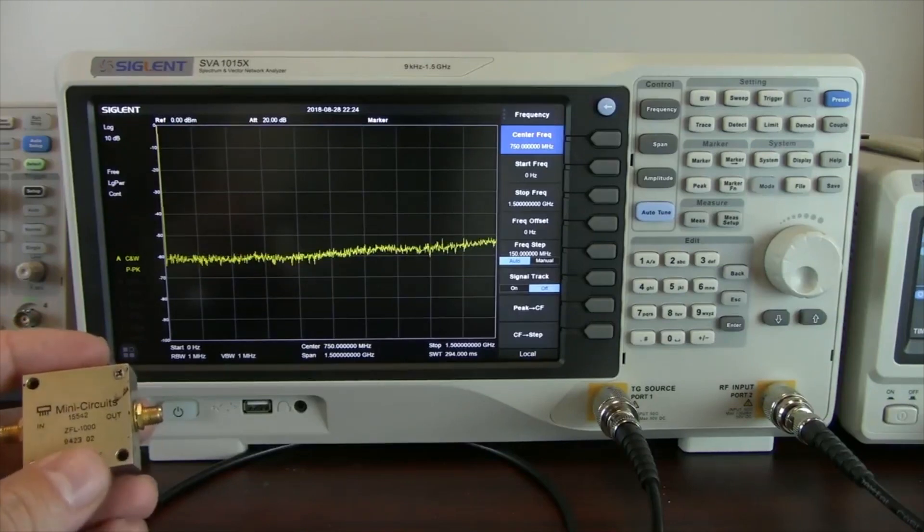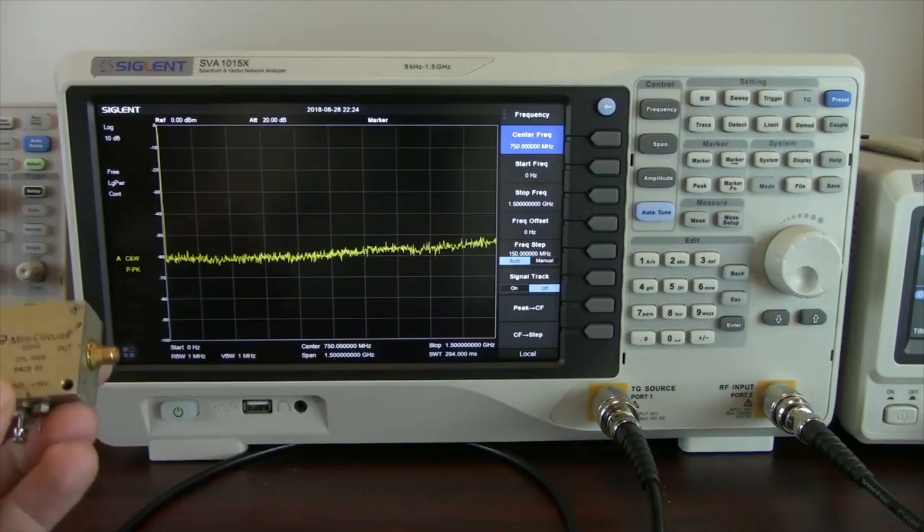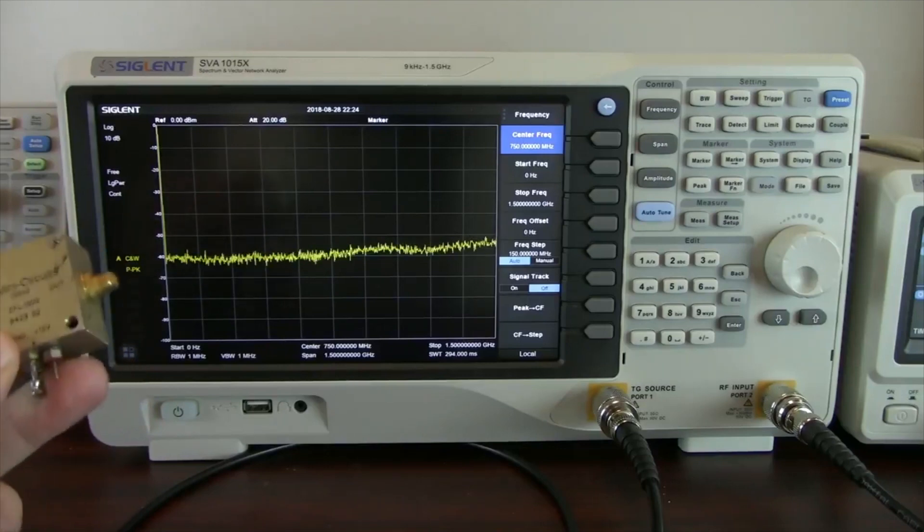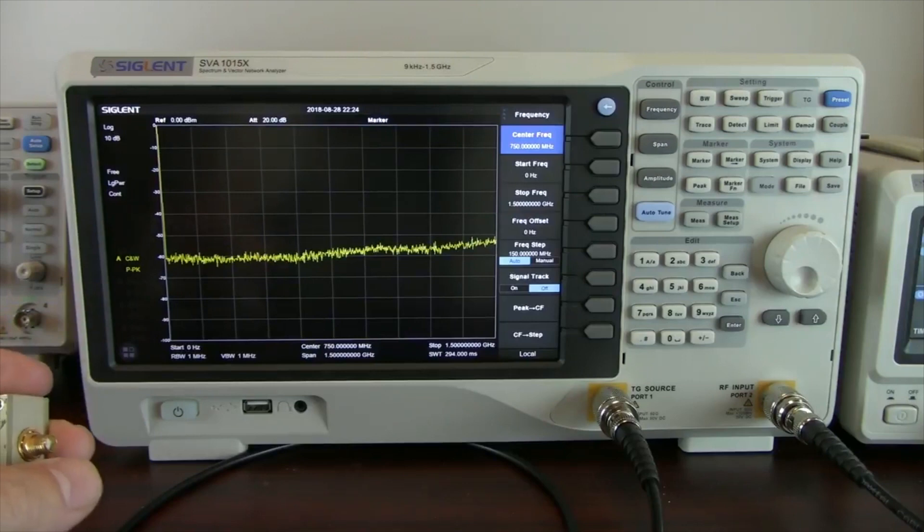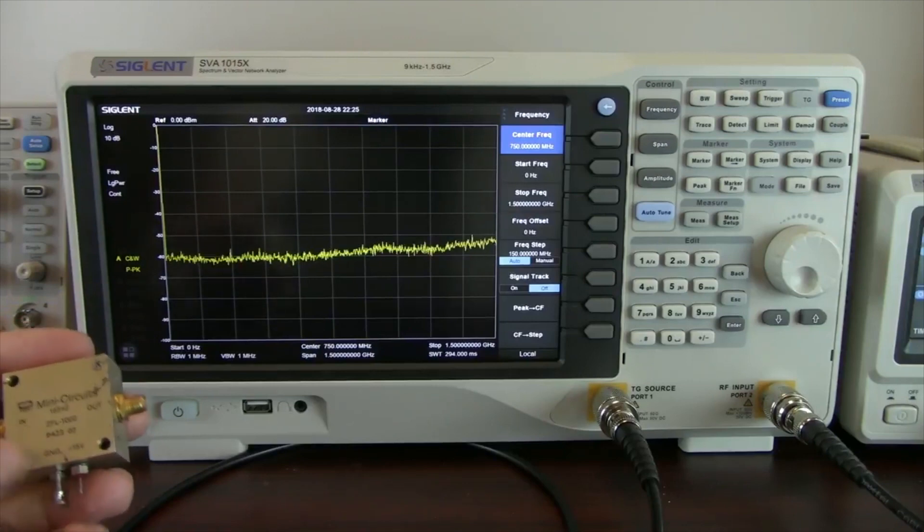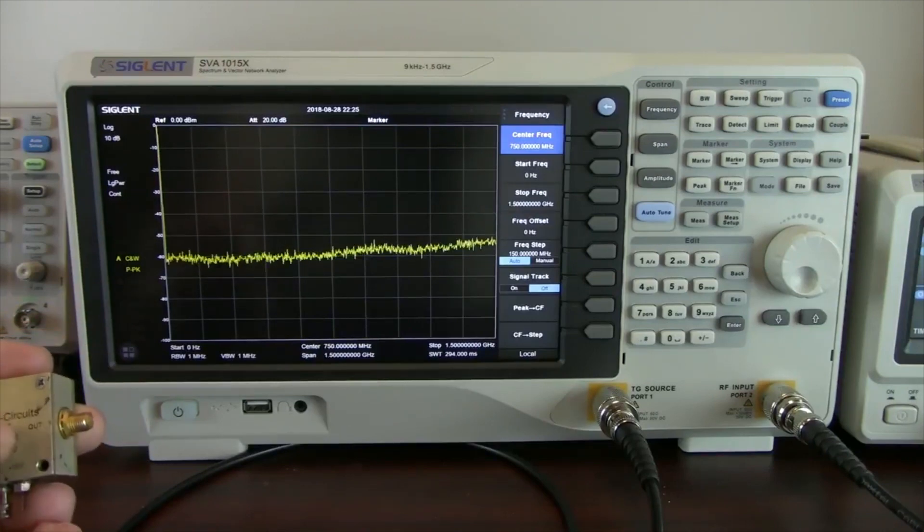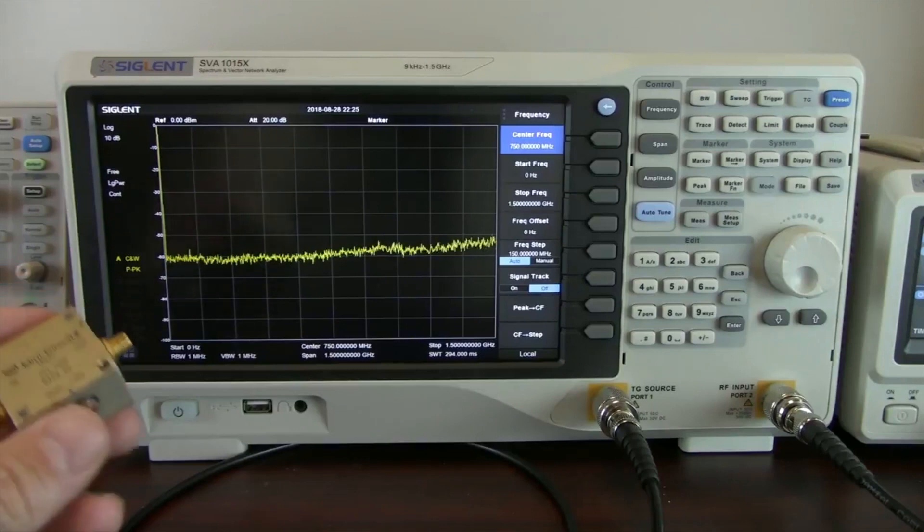So we actually want to minimize the power in, and we're actually going to deliver about minus 40 dBm here, and we're going to look at the output. So we're going to do a low-level amplification and take a look at what would be considered the linear range for this particular amplifier.